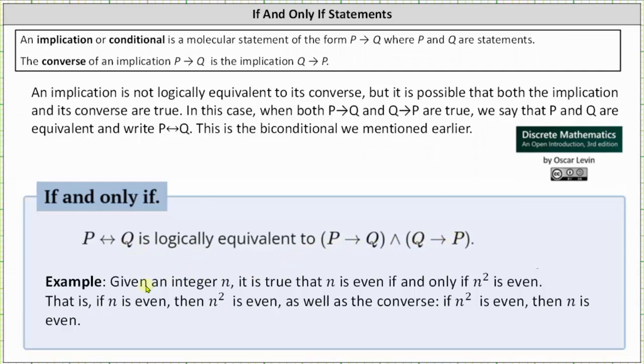As an example, given an integer n, it is true that n is even if and only if n squared is even. That is, if n is even then n squared is even, as well as the converse if n squared is even then n is even.